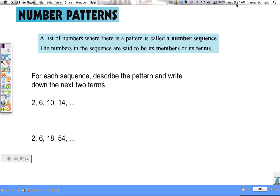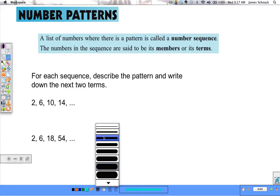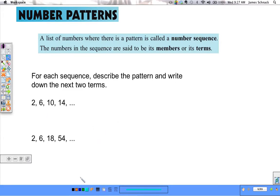All the numbers that make up that sequence are called its members or its terms. So I have two sequences here. I want to describe the pattern with words and write down the next two terms. So, what's going on here? We're looking for a pattern.